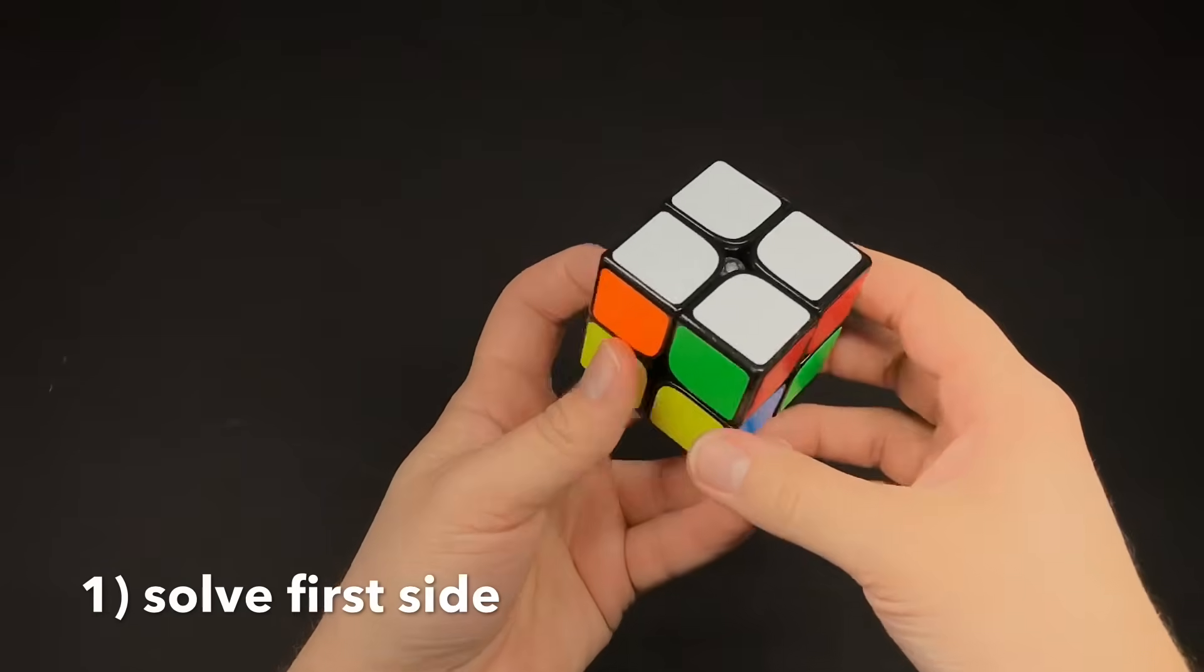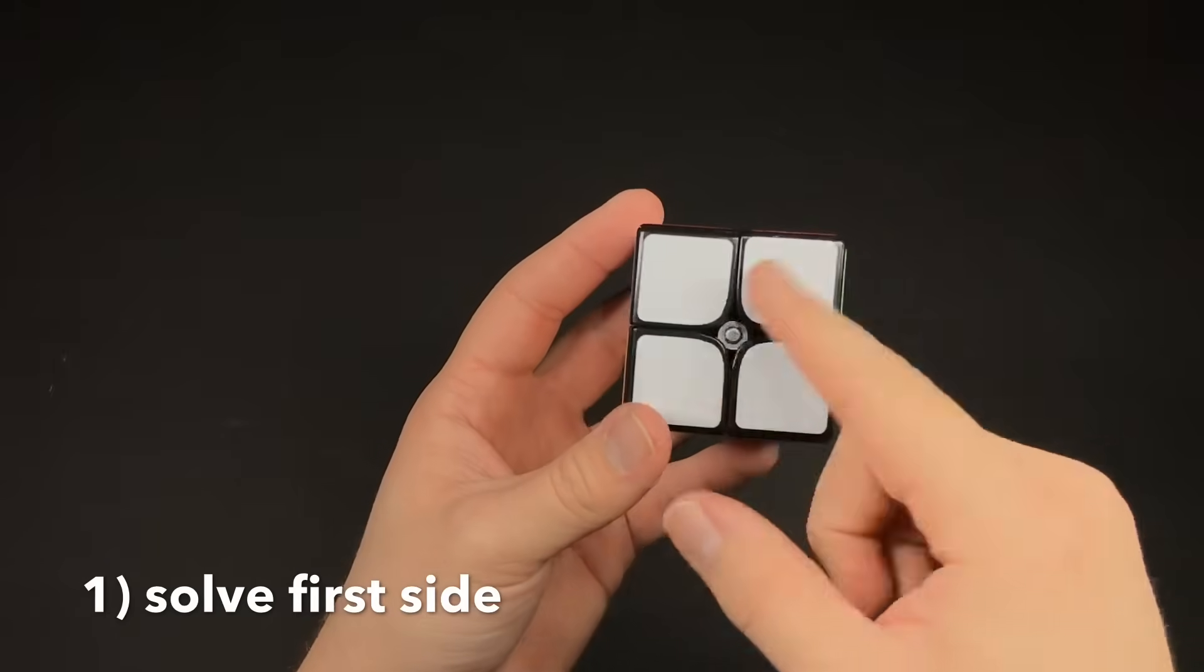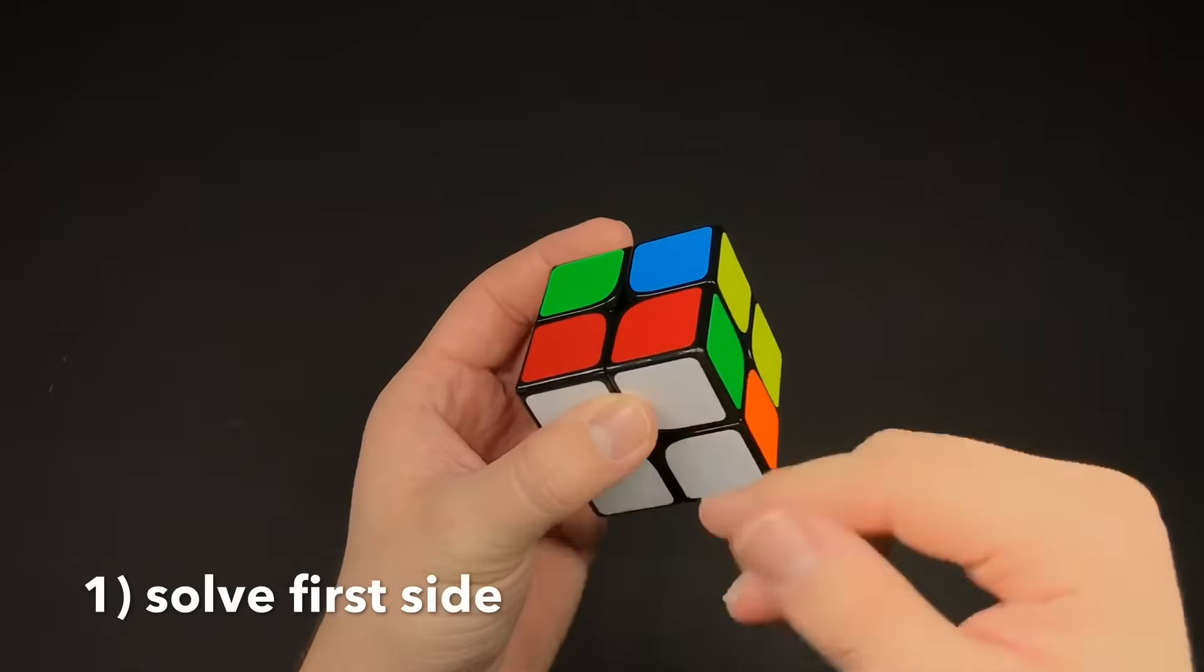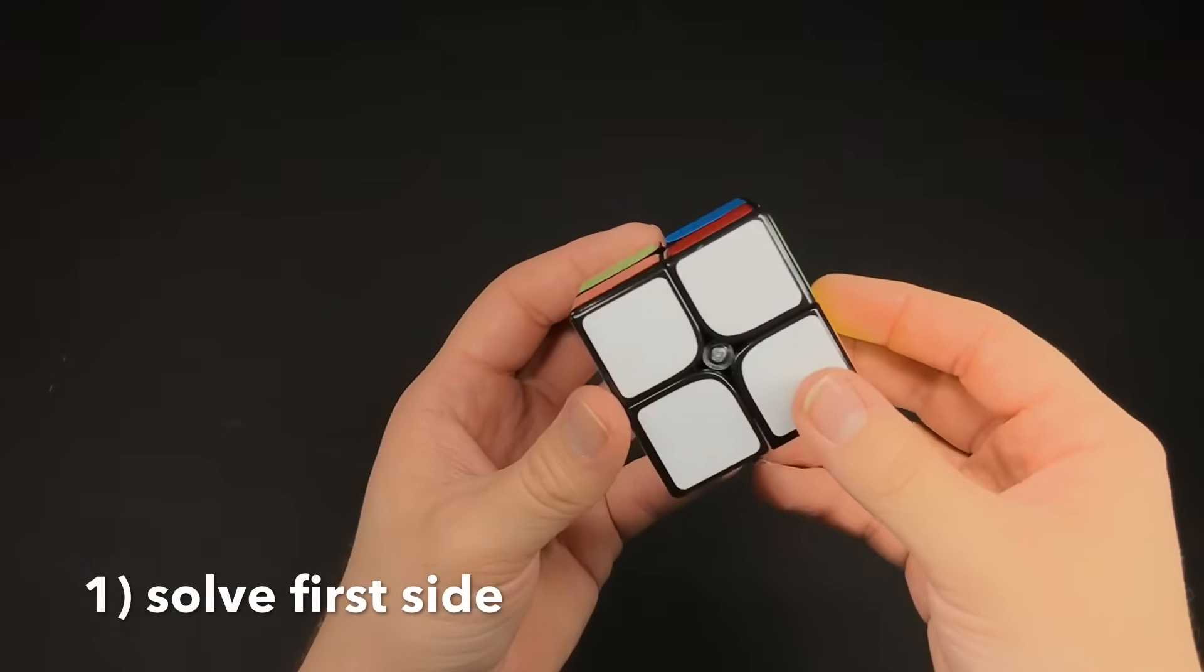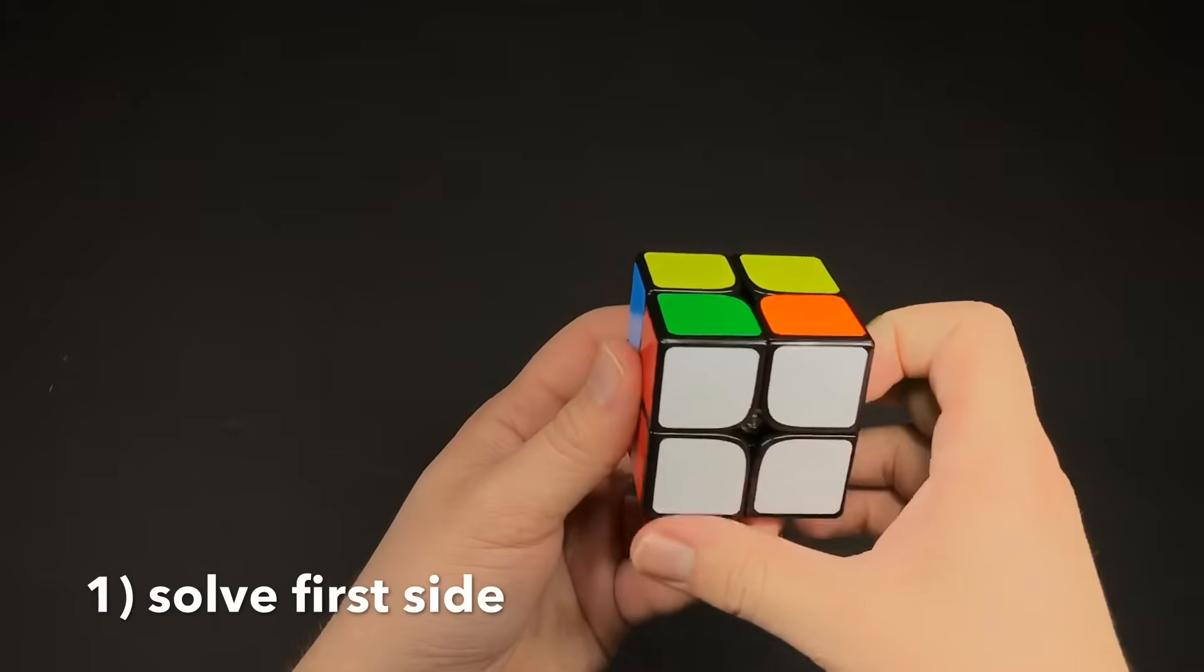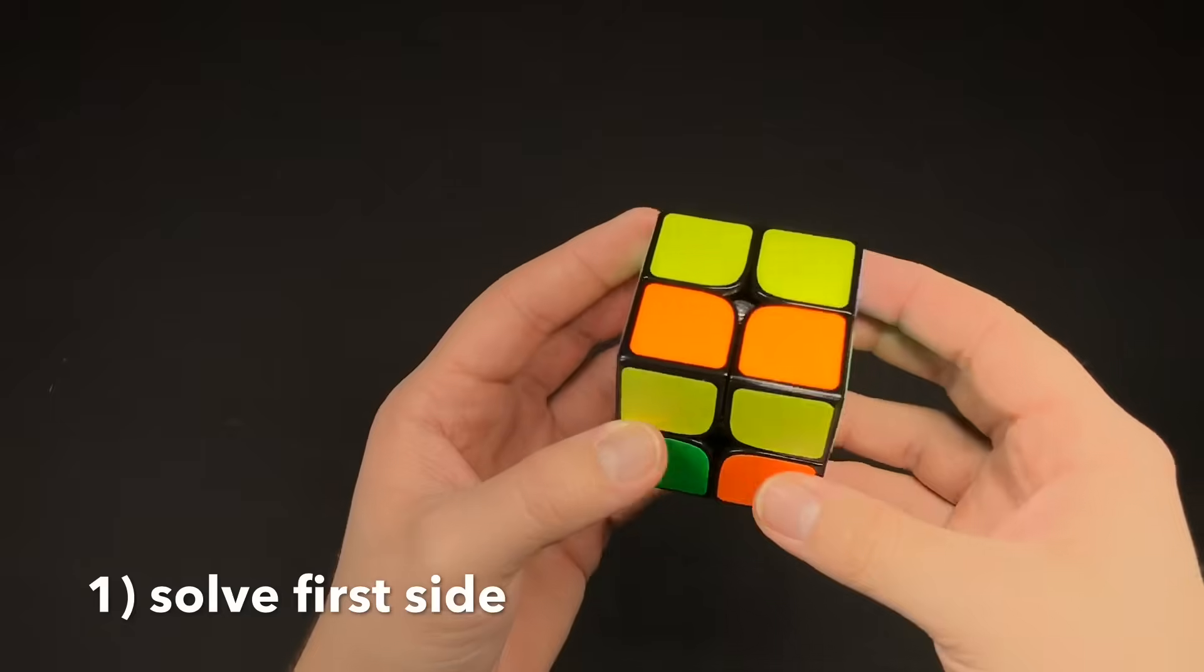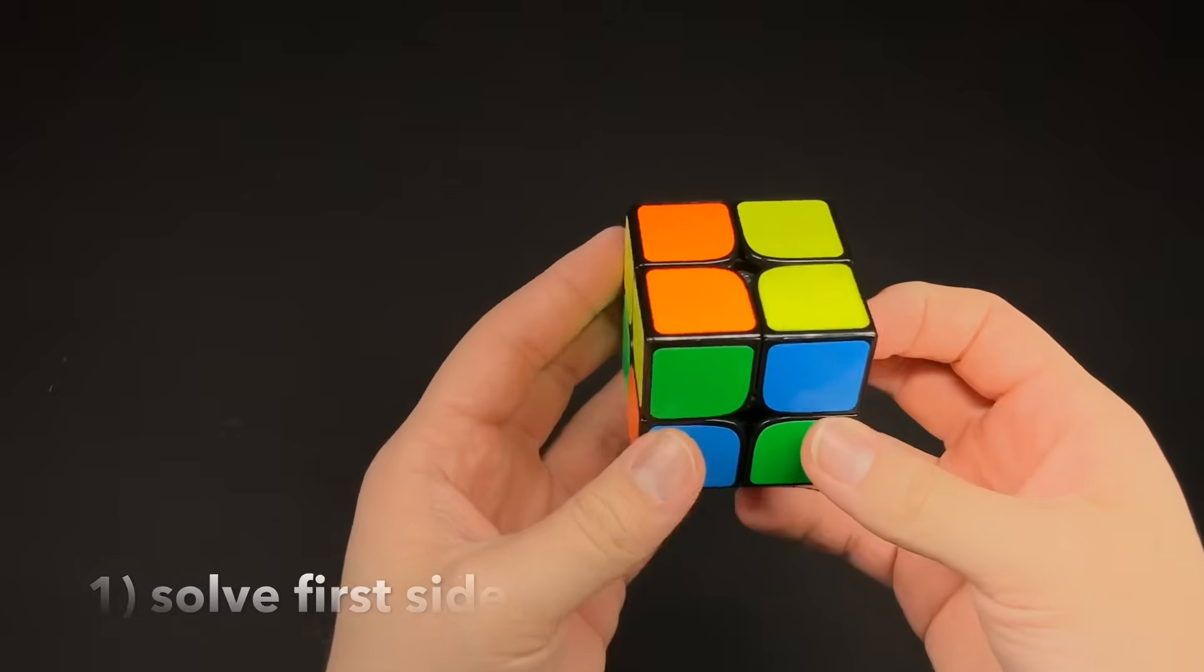There's a few different tricks. If you know how to solve the 3x3, it's the same method as getting the first side. So again, the first side is pretty intuitive. If you need help on it, just leave a comment down below. But it should be pretty intuitive.